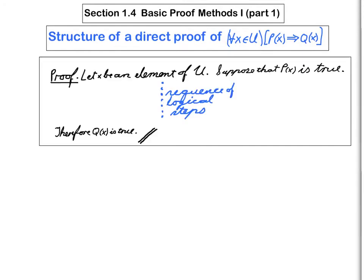So this part gets translated into the first sentence of the proof, let x be an element of U. The fact that we're giving a direct proof means we now assume that the hypothesis is true, and so we put, suppose that P of x is true.